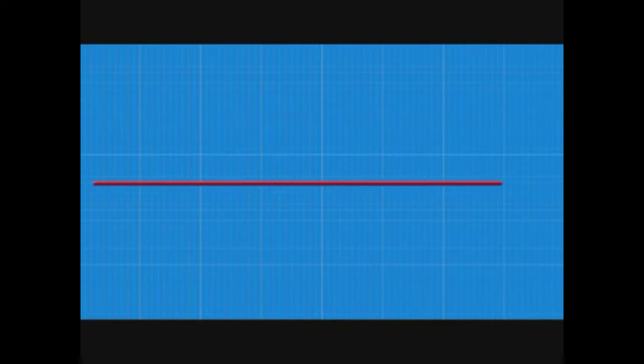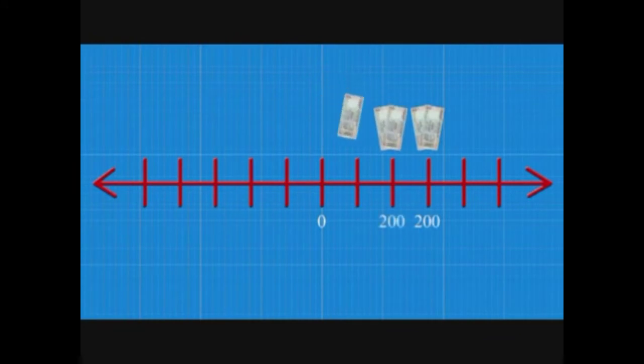If we represent this idea on a number line, having money is positive. As we spend, we move down the line till we go into negative, which means we owe money.